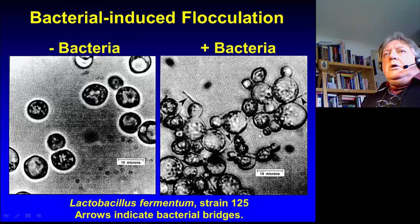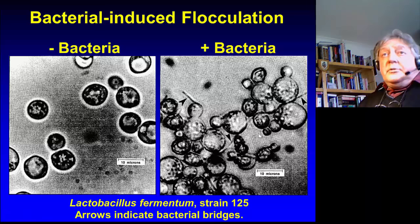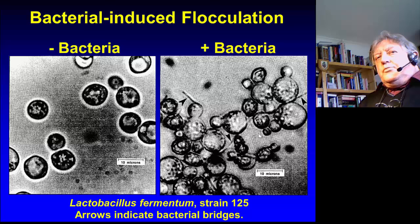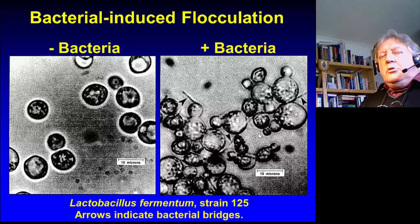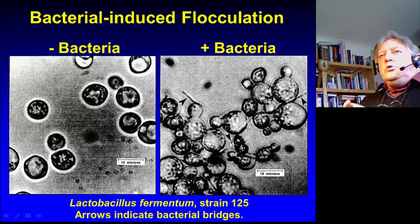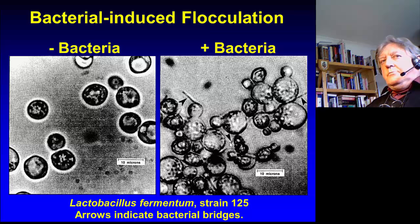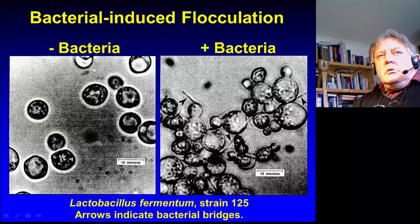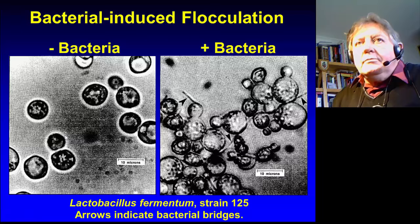Bacteria-induced flocculation is very different — it's another form of flocculation. People working in Brazil in a fuel alcohol plant isolated a strain of rod-shaped Lactobacillus which induced flocculation in ale-type yeast. If this bacterium was present in the yeast culture, it would induce the yeast to form flocs and sediment out of the fermenter. If the bacterium was not present, the yeast conducting the fermentation would remain as single cells.